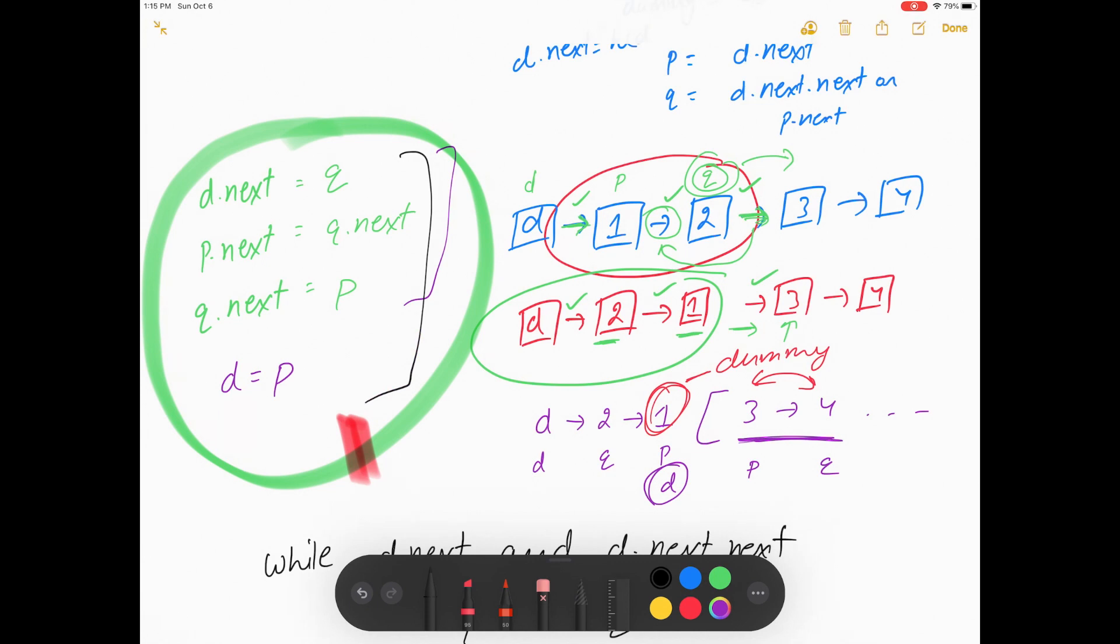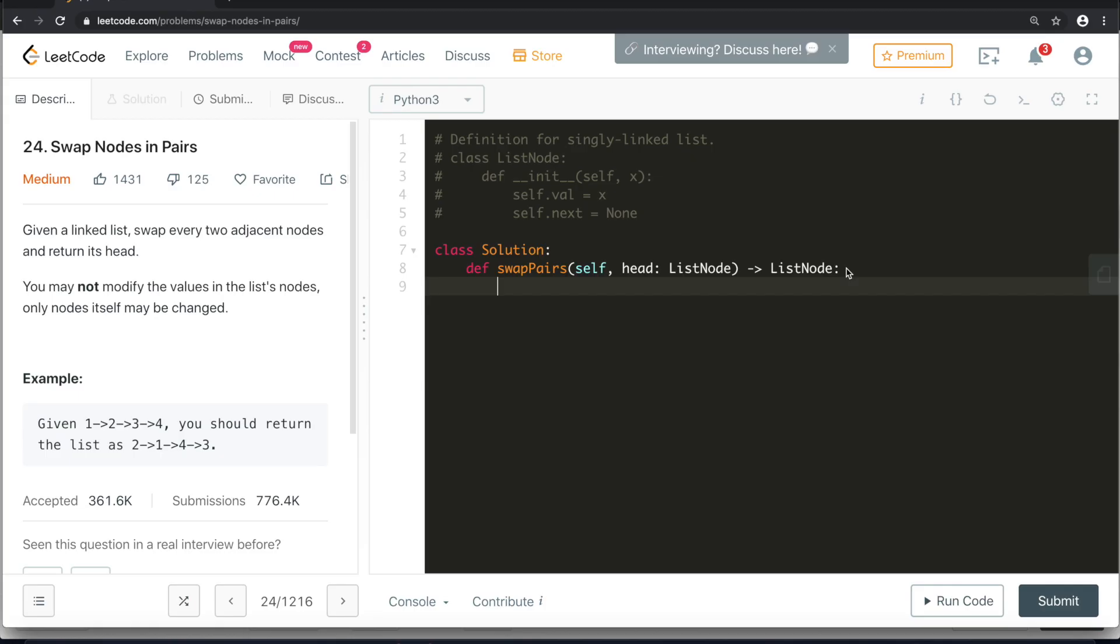And at the end we will get our answer. So let's first make a dummy node. So we are making two dummy nodes so that because at the end we need to return something. ListNode having value 0, and d.next will point to head